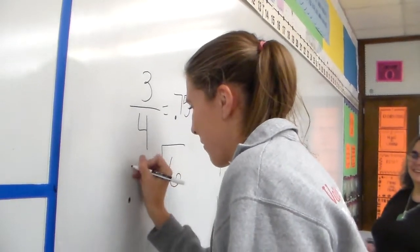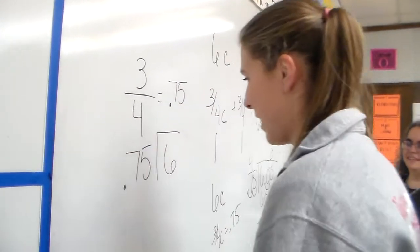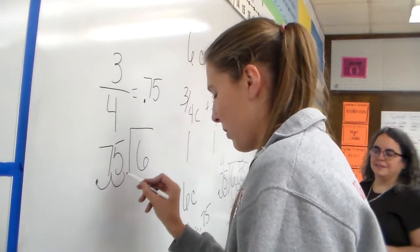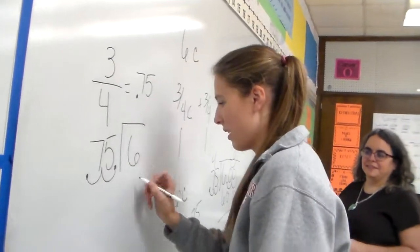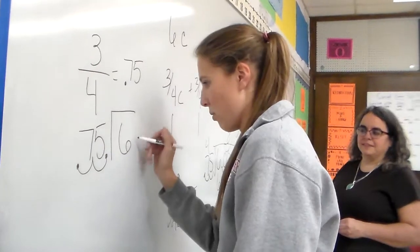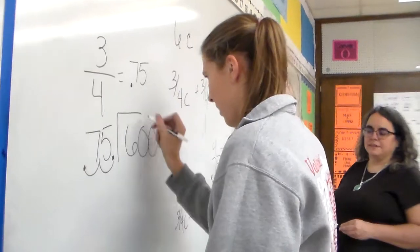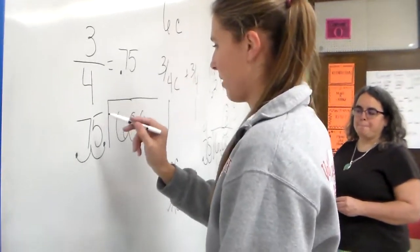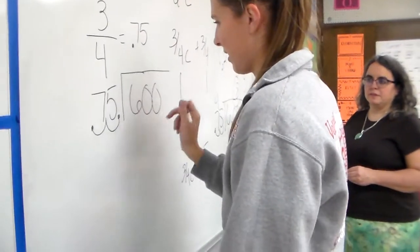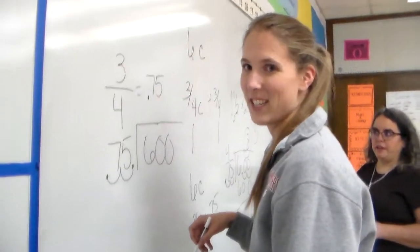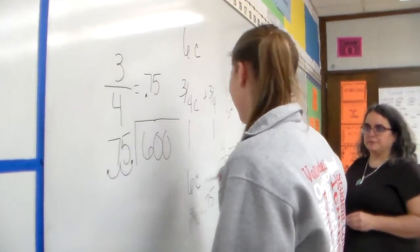And take 0.75 divided by six. And so you first have to move this over two places, and so then you have to move the decimal over here two places. Think about that. Right? And so then you take 600 divided by 75, and when you do that, you get eight.